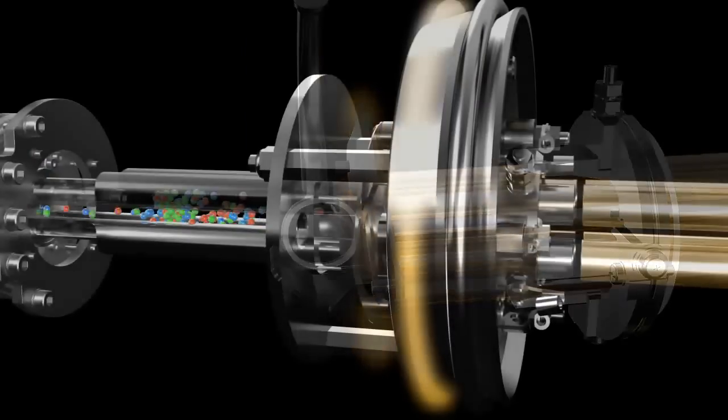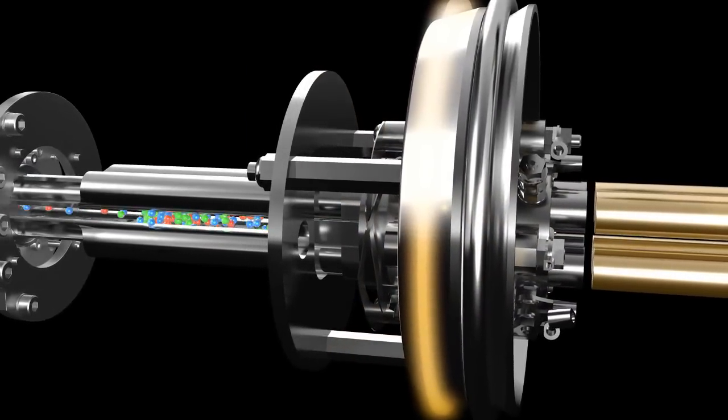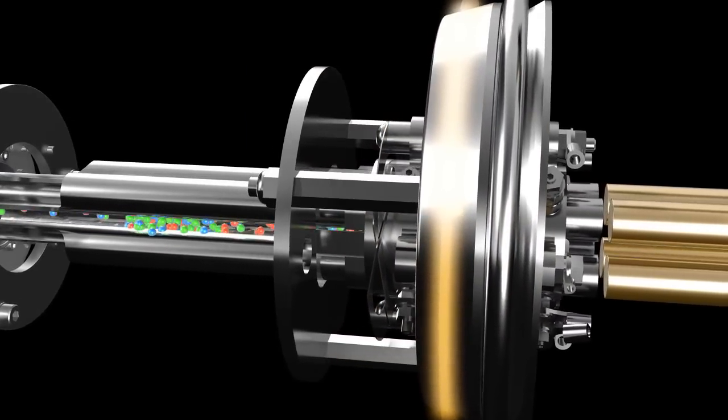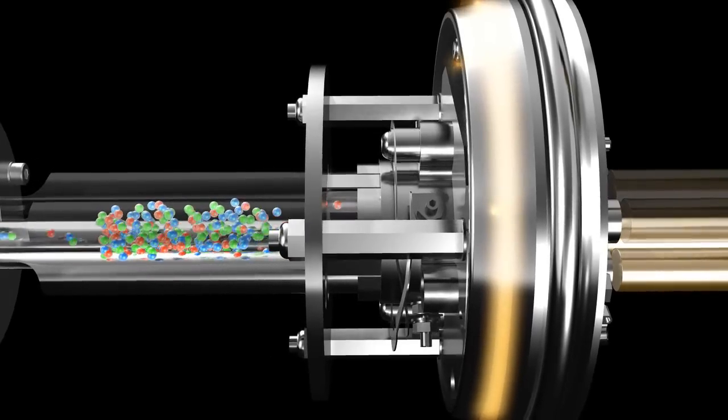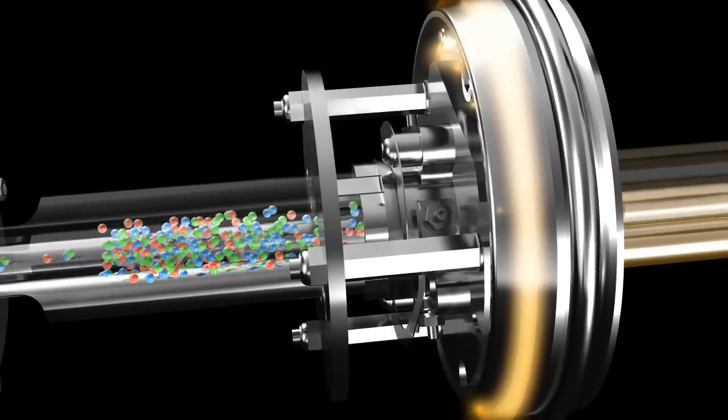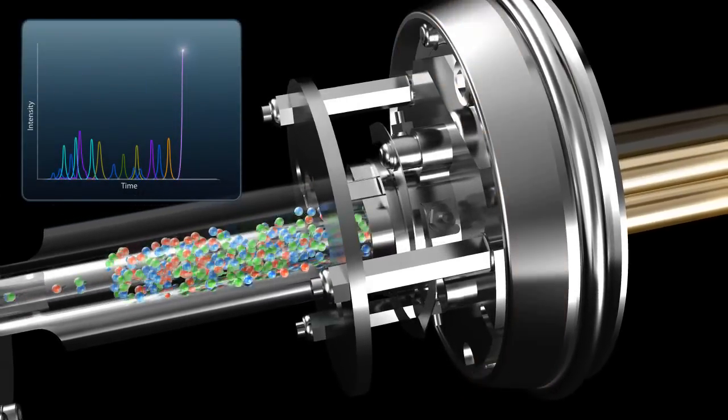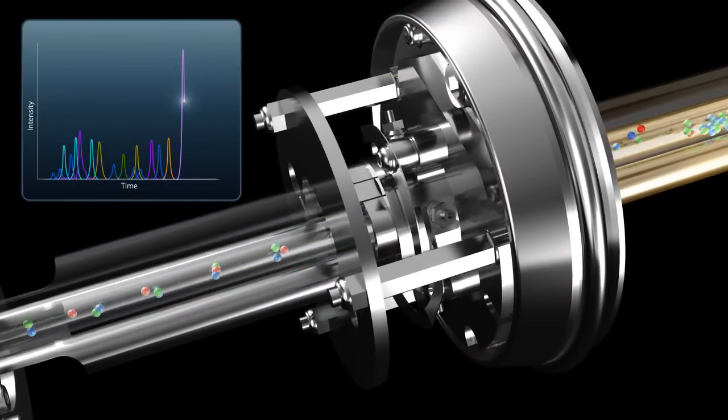During full-scan MS-MS acquisition, concurrent Q0 trapping is enabled to ensure you never miss anything eluding from your LC column. Once sufficient MS-MS data have been acquired, the system returns to MRM mode to detect the next transition.